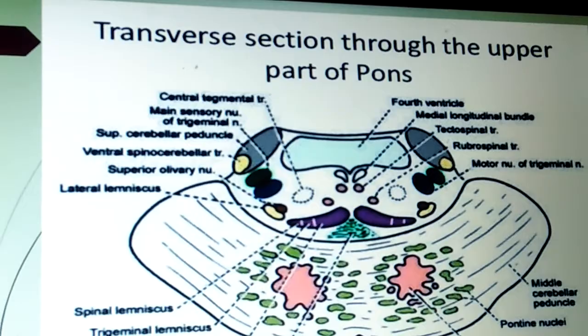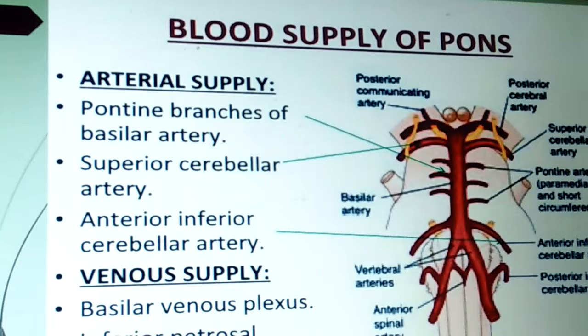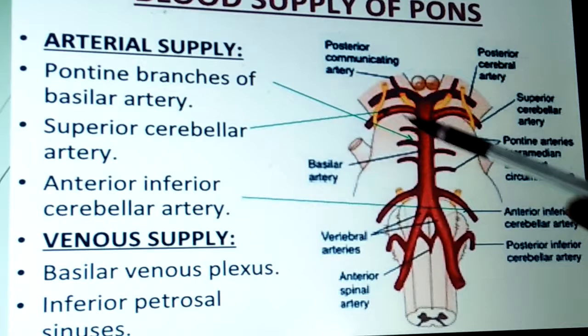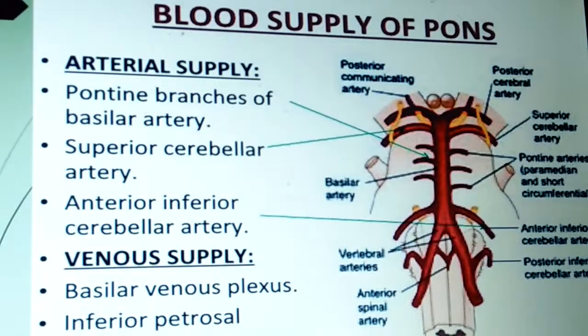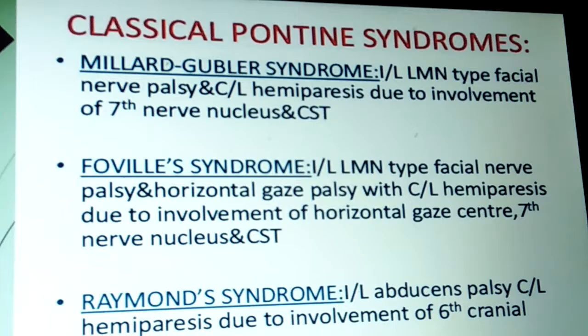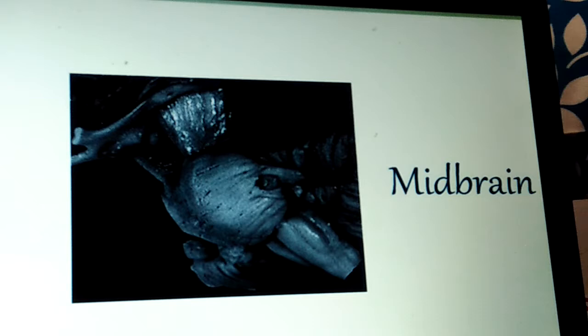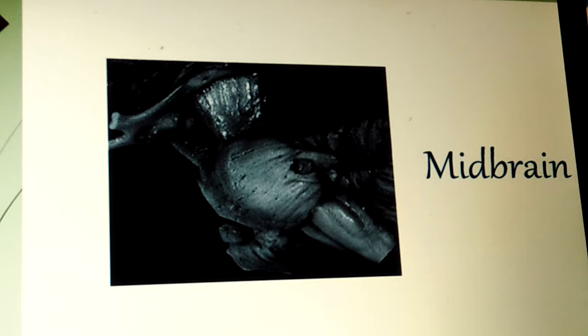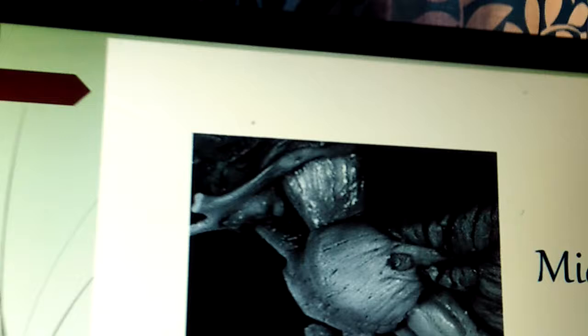Blood supply of the pons — arterial: pontine branches of the basilar artery, superior cerebellar artery, and anterior inferior cerebellar artery. Venous drainage: basilar venous plexus and inferior petrosal sinus. Classical pontine syndromes include Millard-Gubler syndrome, Foville's syndrome, and Raymond syndrome. The cross-sections at the upper and lower pons are important for short note answers.